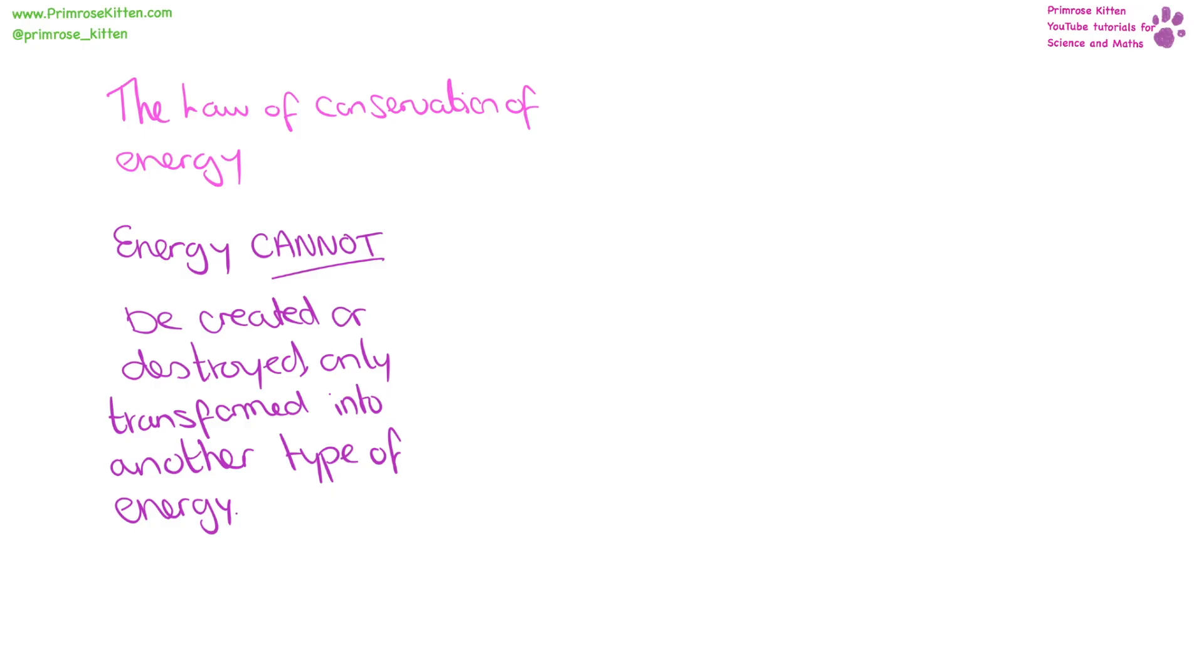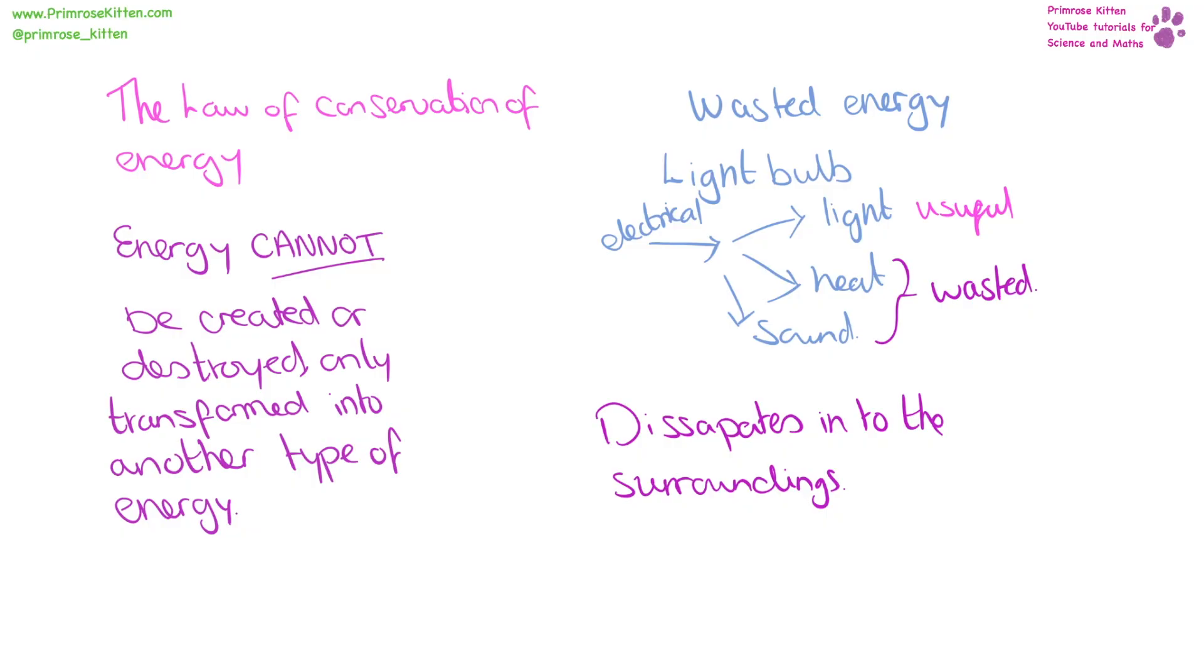While energy cannot be created or destroyed, it can be wasted. Wasted energy is any energy that comes out of a situation that we didn't intend for it to be there. For example, in a light bulb, we have electrical energy going in, this is converted into light, heat, and sound. The light is the useful energy, whereas the heat and the sound are not useful energy, they are wasted energy. And a worthy example would love to describe this if we can say that the wasted energy dissipates into the surroundings. It spreads out so much it can't be collected and used. It's not gone, it's still there, it's just spread out, it's dissipated.